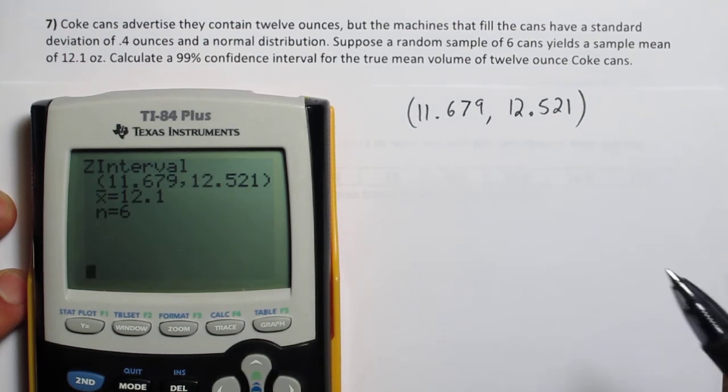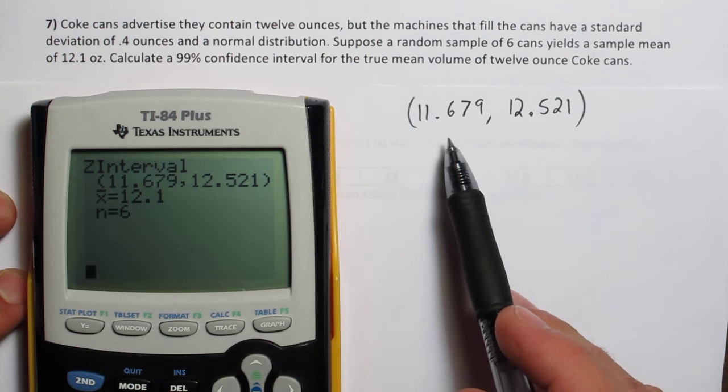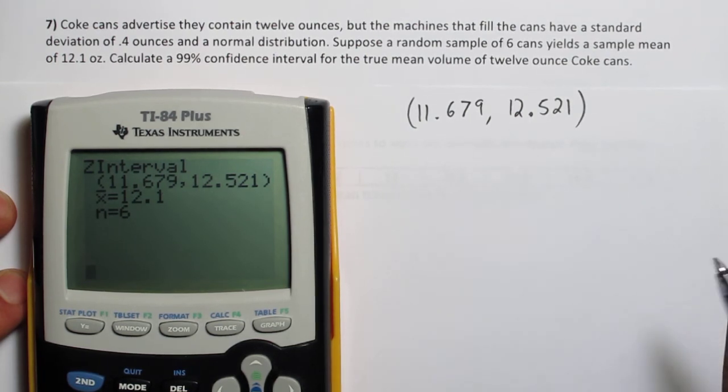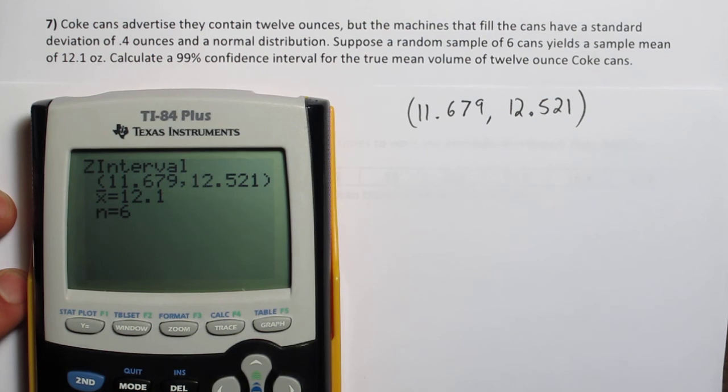But one thing of interest is, notice the number 12 is contained in this interval. That's good news for Coke, because it doesn't provide us with evidence that they're false advertising that their cans contain a true average of 12 ounces.